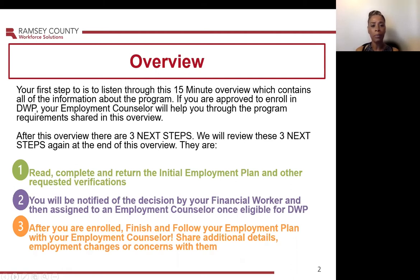Step 1: Read, complete, and return the initial employment plan and other requested verifications. Step 2: You will be notified of the decision by your financial worker and then assigned to an Employment Counselor once eligible for DWP. Step 3: After you are enrolled, finish and follow your employment plan with your Employment Counselor. Share additional details, employment changes, or concerns with them.